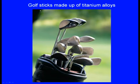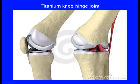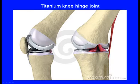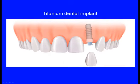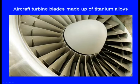Typical titanium products include golf sticks made of titanium alloys, titanium knee hinge joints, titanium hip joints used for hip replacement, titanium dental implants very useful in dental surgery, and aircraft turbine blades made up of titanium alloys.